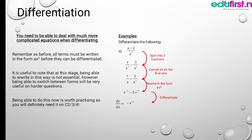Because it's minus 1, the differentiation gives minus x to the power minus 2. And minus times minus is plus, so plus 4x to the power minus 3. Now rewriting using the power rule, dy/dx equals minus 1 over x squared plus 4 over x cubed.